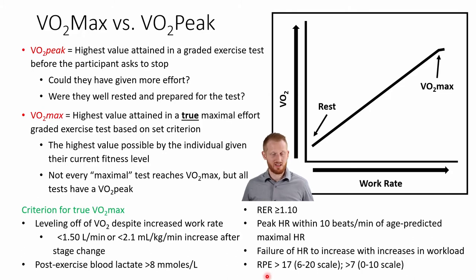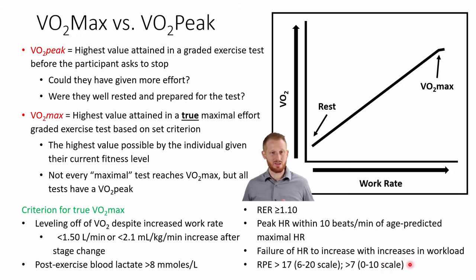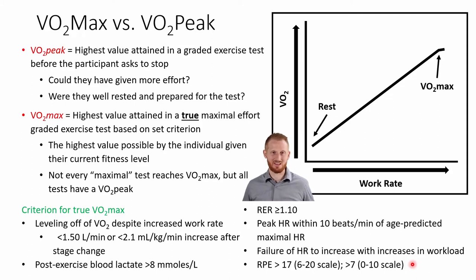The final criterion listed is a rating of perceived exertion (RPE) of 17 or greater on the 6–20 Borg scale, or greater than 7 on the 0–10 scale. Meeting these criteria makes it more likely the test represented a true VO2 max — a highly motivated, best-effort performance where the person was not sick or otherwise compromised.